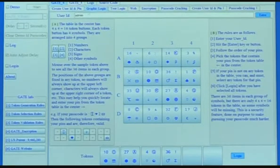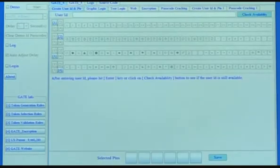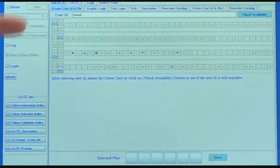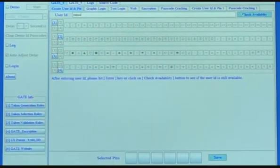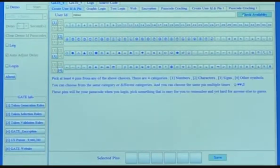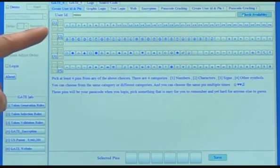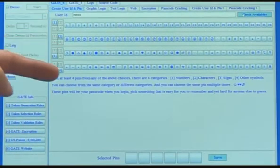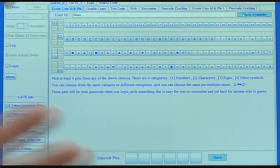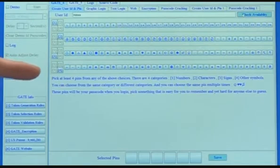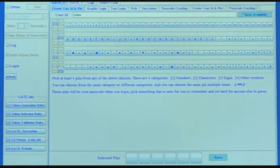First of all, you come here, create a user account, type in whatever user account. Your name, user ID, type in ID. And now, check availability. See if this ID has been used. It's not been used. So, there are four different categories of symbols you can choose as your PIN. You choose whatever is easy for you to remember but hard for anybody else to see. Just choose four symbols. Make sense.